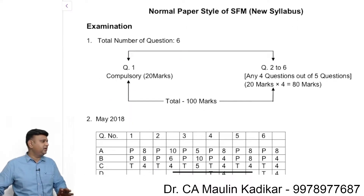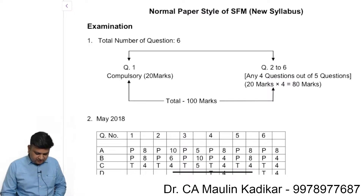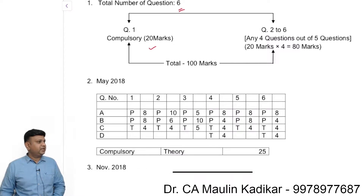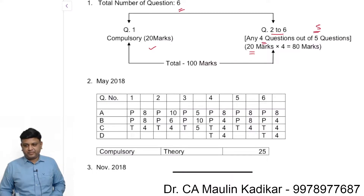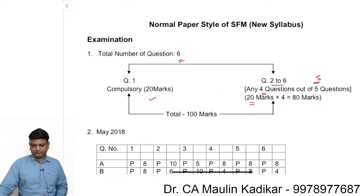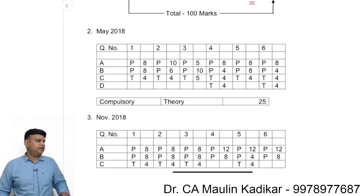First, a small introduction about the examination paper style and the number of chapters in CA Final SFM. The normal paper style has usually 6 questions in the examination paper. Question number 1 is of 20 marks, and question number 2 to question number 6 are also 5 questions of 20 marks each. In the examination paper, the first and second questions would be practical questions and the last question would be the theory question.